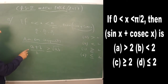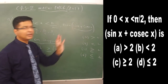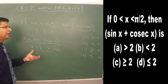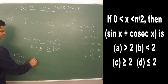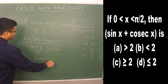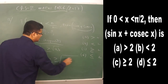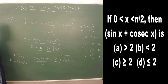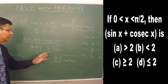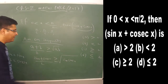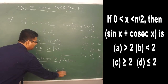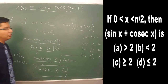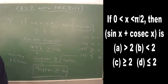Applying AM-GM with a = sin x and b = cosec x: (sin x + cosec x)/2 ≥ √(sin x · cosec x). Since sin x and cosec x are reciprocals, their product is 1, and √1 = 1. Cross-multiplying gives sin x + cosec x ≥ 2, which is option C.